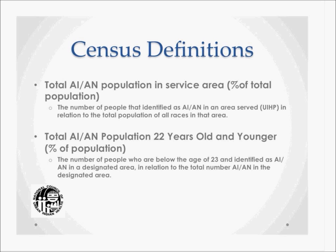The first two are related to total populations of American Indian and Alaska Native populations. The first is the percent of the total population — the number of people who identify through census as American Indian or Alaska Native in a specific area served, such as an urban Indian health program, in relation to the total population of all races in that area. If looking for the total AIAN population 22 years old and younger as a percent, this refers to those below age 23 self-identified as AIAN in a designated area relative to the total AIAN in that area.